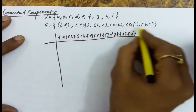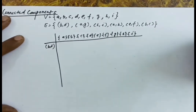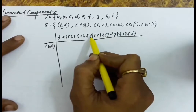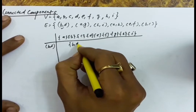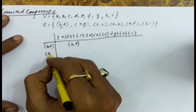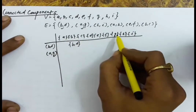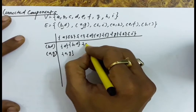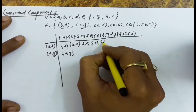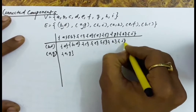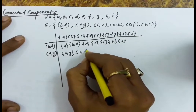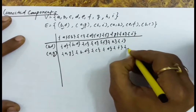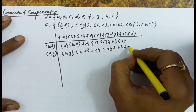For each edge in the graph, let's say we select edge B-D first. We find out if B and D are in the same set — they are not, so we unite these two sets. We take another edge A-G: A is in a different set and G is in a different set, so we unite A and G as well.